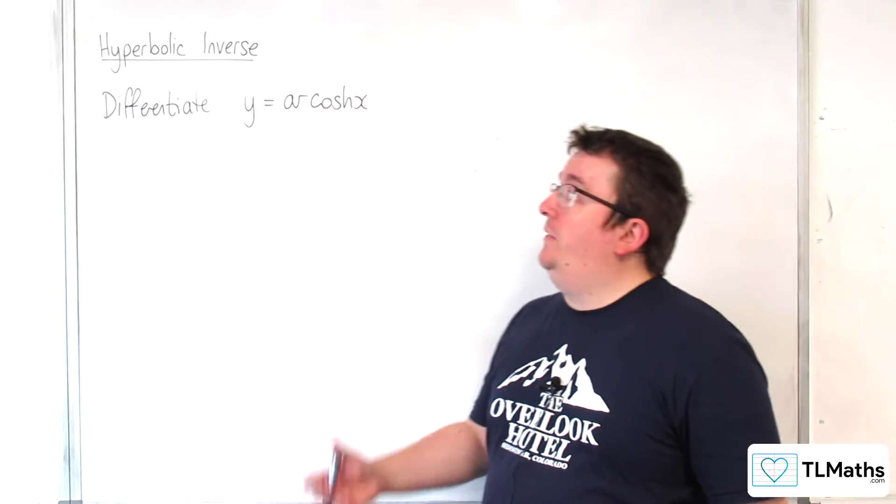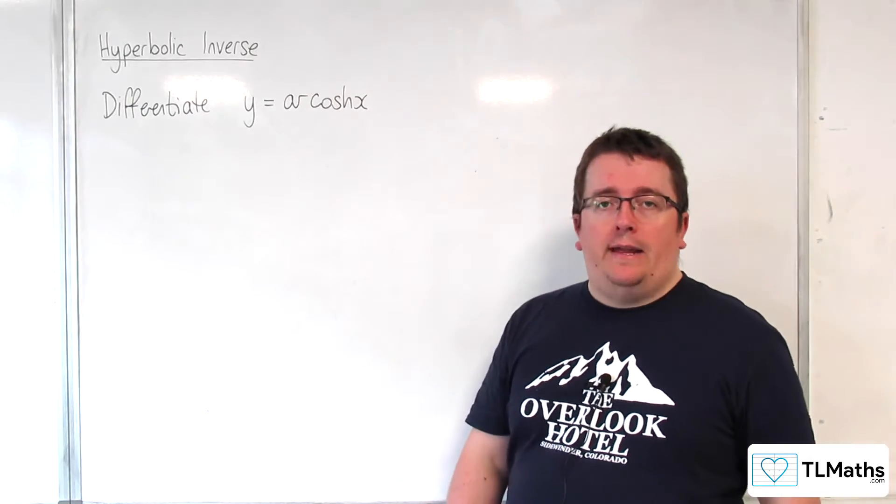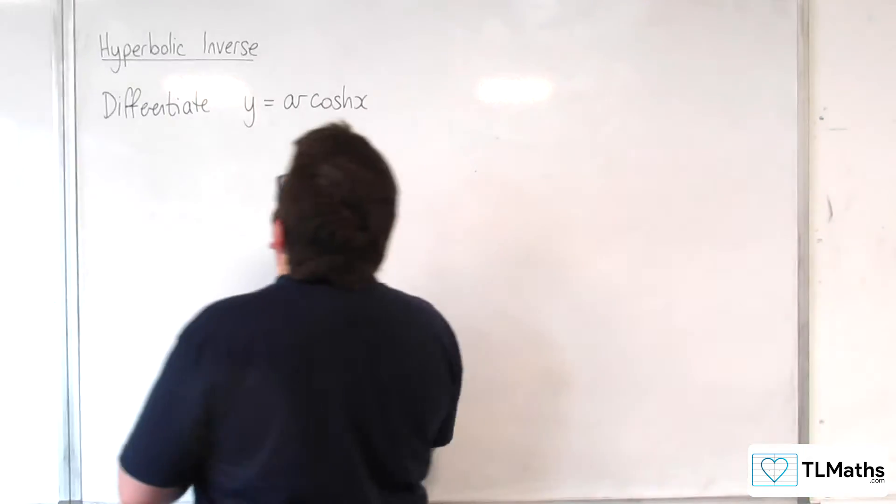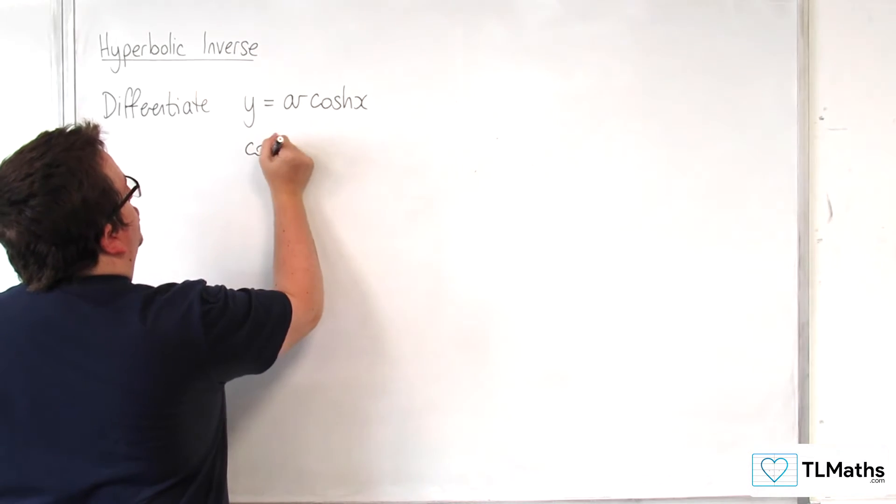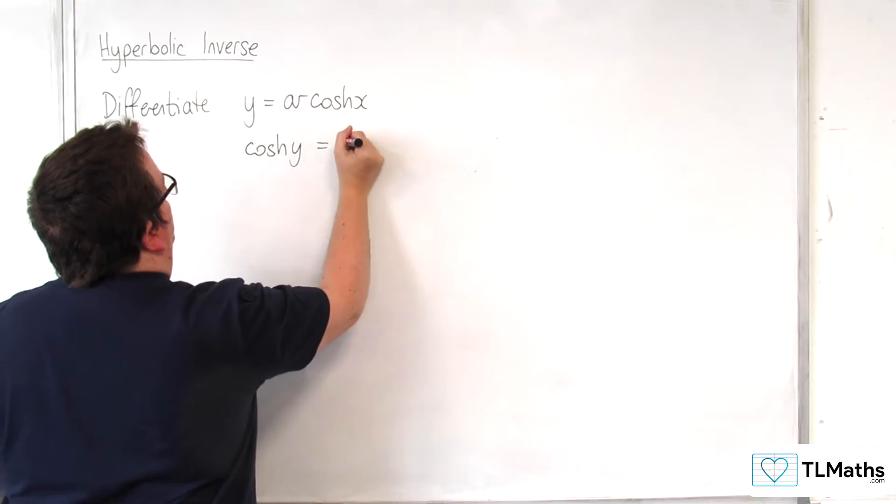In this video we're going to be differentiating y equals arcosh of x. The first thing that we're going to do is rewrite that as cosh of y is equal to x.